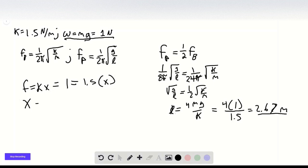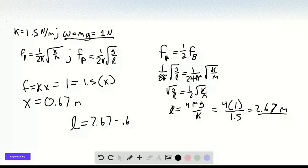So this means that X equals 0.67 meters. So it's stretched an extra 0.67 meters, which means that the unstretched length L equals 2.67 minus 0.67 equals 2 meters.